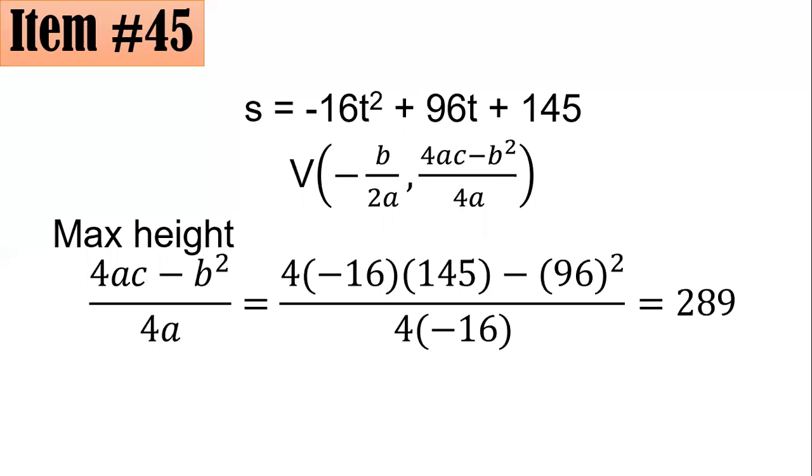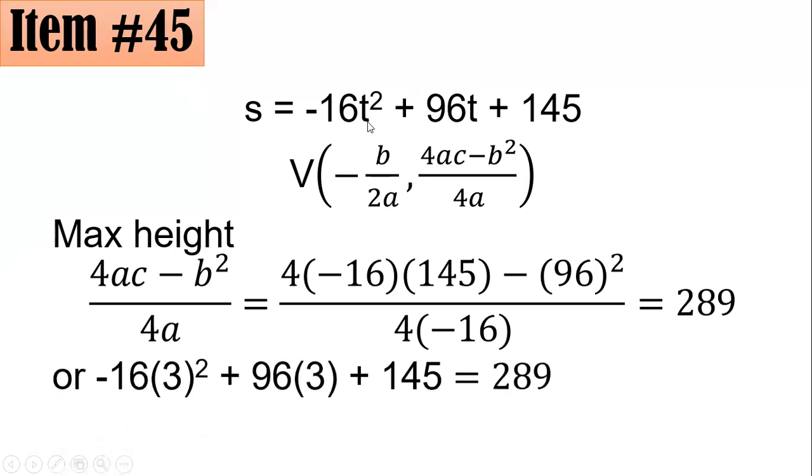But aside from that, in the previous slide, the h is 3. You could also substitute 3. That value of h here, which is 3. It becomes negative 16 times 3 squared, plus 96 times 3, plus 145. And if you simplify that, that's still 289. So you have two options in getting the maximum height. Whatever the value of h, substitute in this one. Or you can just directly use 4ac minus b squared all over 4a. The correct answer here is letter C.